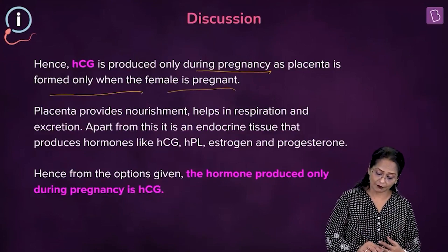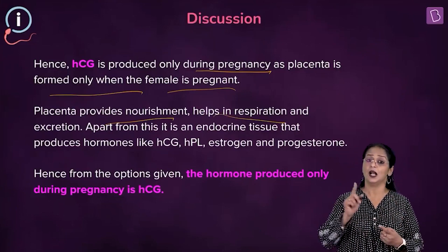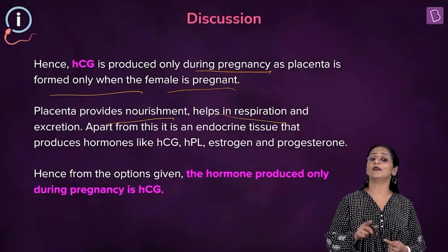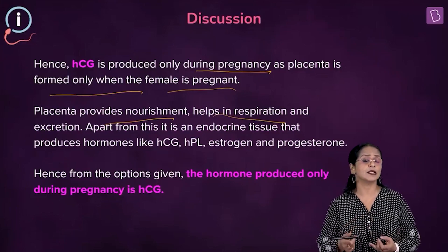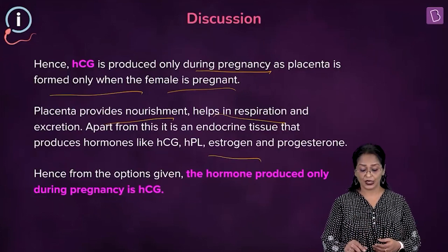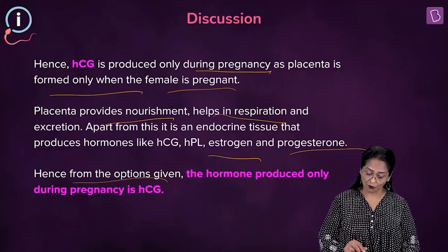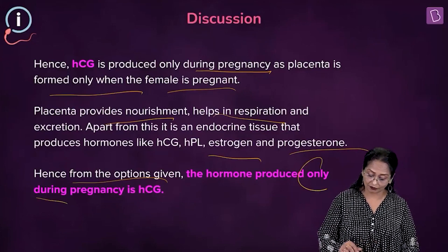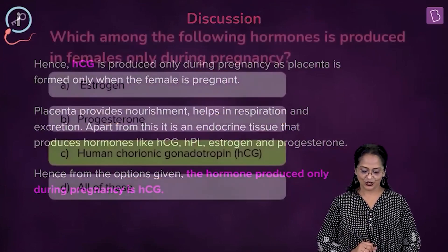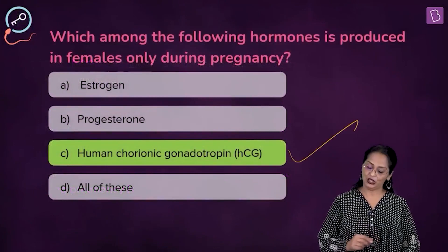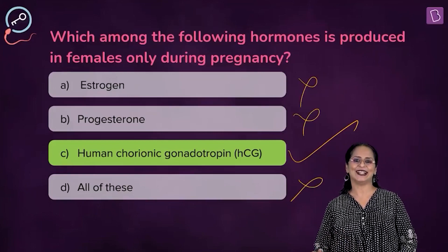The placenta provides nourishment, helps in respiration and excretion. Other than all these, it also behaves as an endocrine gland — it secretes HCG, HPL (human placental lactogen), and helps in secreting estrogen and progesterone. From the options, the hormone produced only during pregnancy is HCG. The correct option is C. You can eliminate A, B, and D.